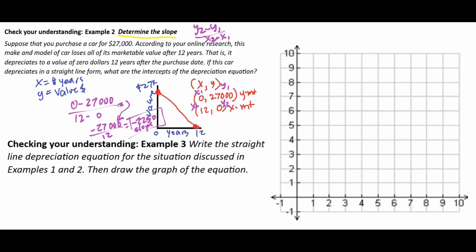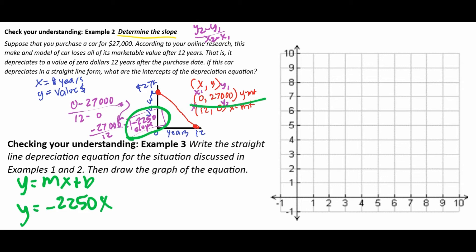For example number three, we're going to graph this and write the equation. To write the equation, remember y equals mx plus b is the straight-line equation we're going to use, where m is the slope and b is the y-intercept. We've already found both of these pieces. The slope is negative $2,250, so the equation is going to be y equals negative 2,250x. The y-intercept is the coordinate at 27,000. So all we're really saying is we started with a $27,000 vehicle and it's losing $2,250 every year.